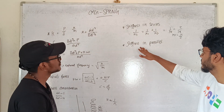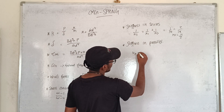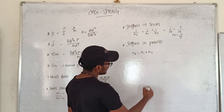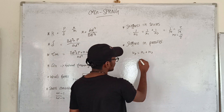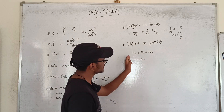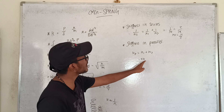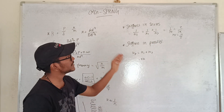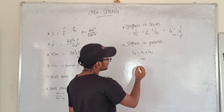Next is stiffness in parallel. For springs in parallel, the total stiffness K equals K1 plus K2. If we want to establish stiffness in parallel with two identical springs, the equivalent stiffness equals 2K.